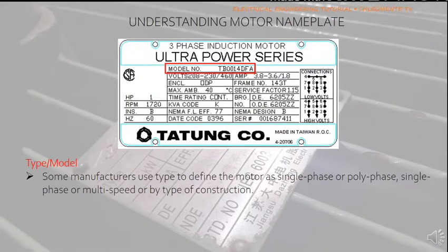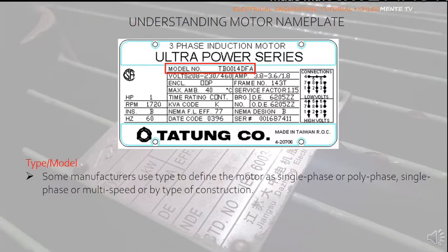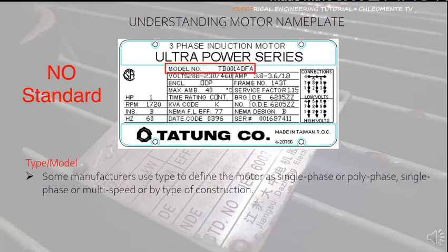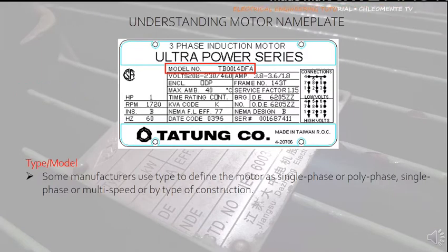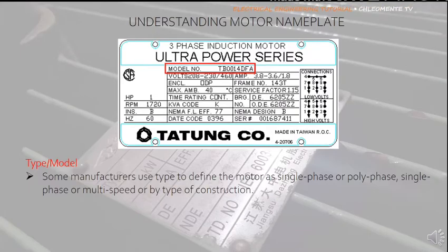Type or Model: Some manufacturers use type to define the motor as single phase or polyphase, single speed or multi-speed, or by type of construction. For model, there is no standard — manufacturers provide unique model numbers for their own reference. When a replacement is needed, you can refer to this data on the nameplate and send it to the manufacturer to get the same type of motor.